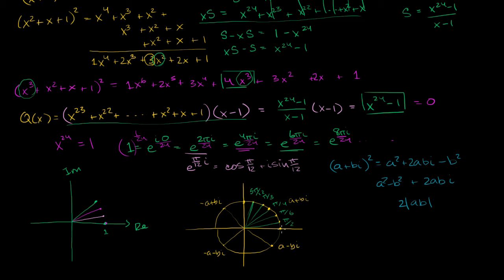We already said we have to ignore 1, because we added that root. But even if we didn't, 1 squared still has no imaginary part. We can also ignore an angle of π/2, or 90 degrees — this has no real part, and when you square it the imaginary part is 2 times the real times the imaginary part, which is 0. So this will also not contribute. We really just care about the angles in between.